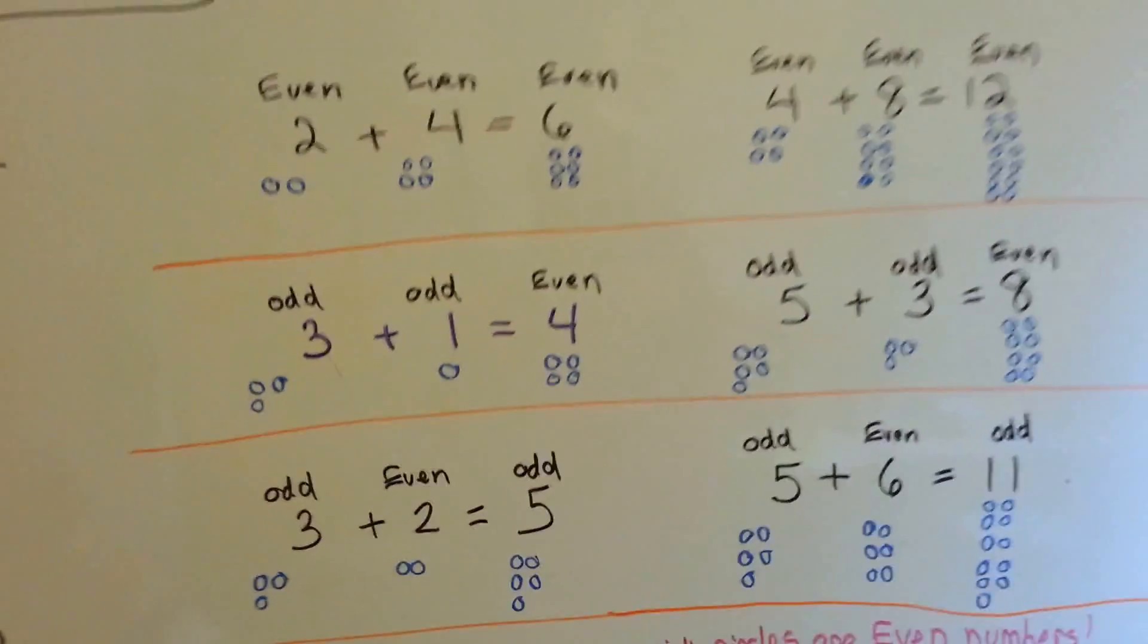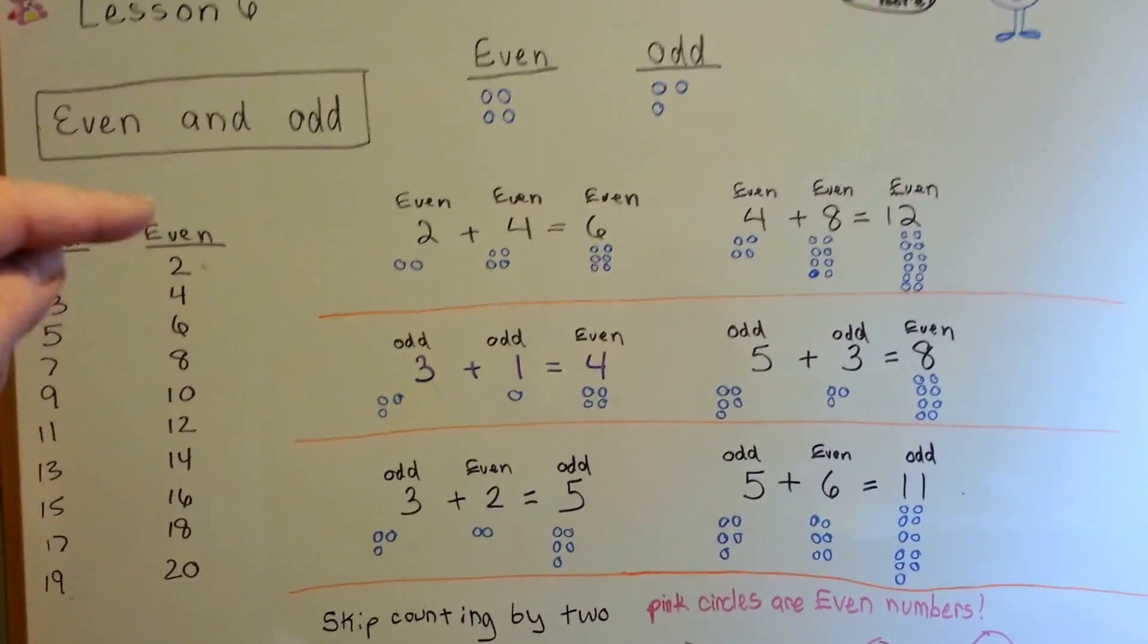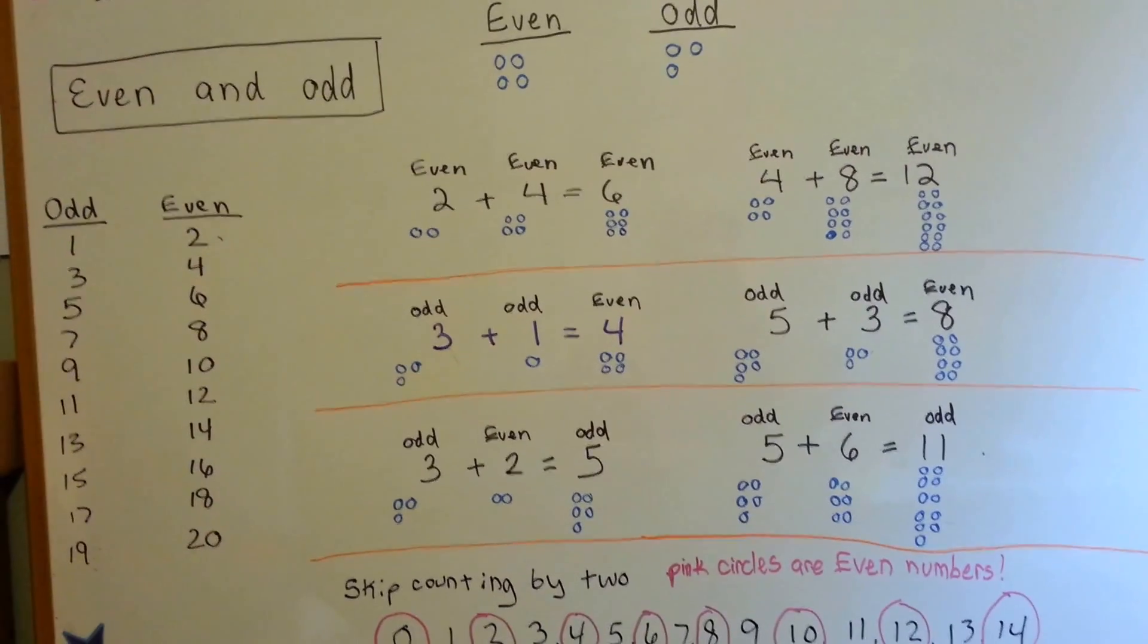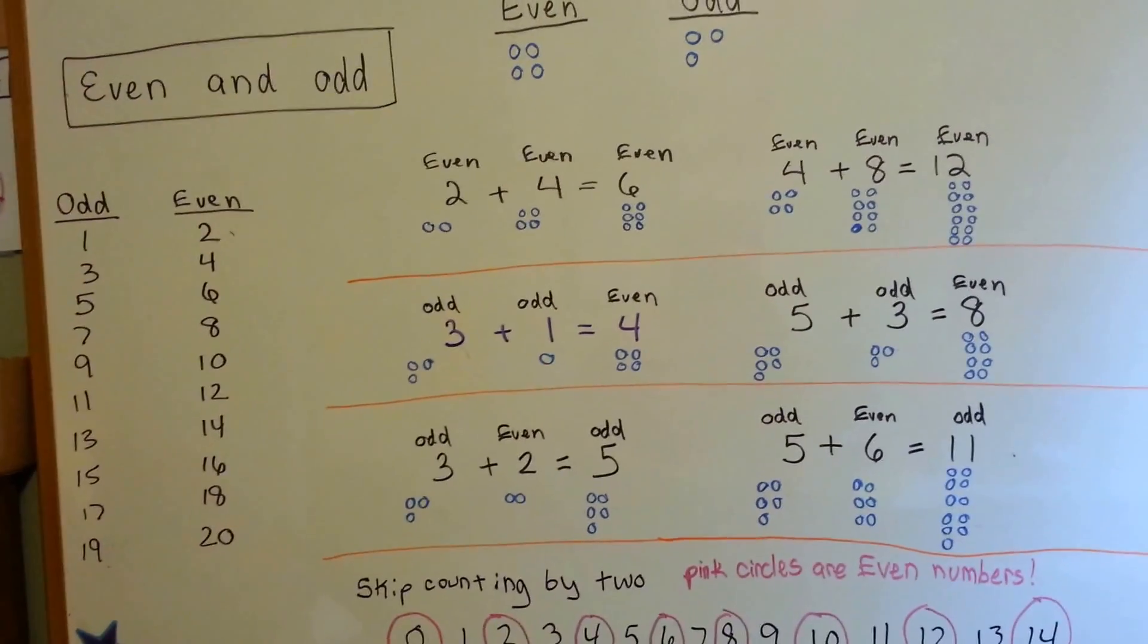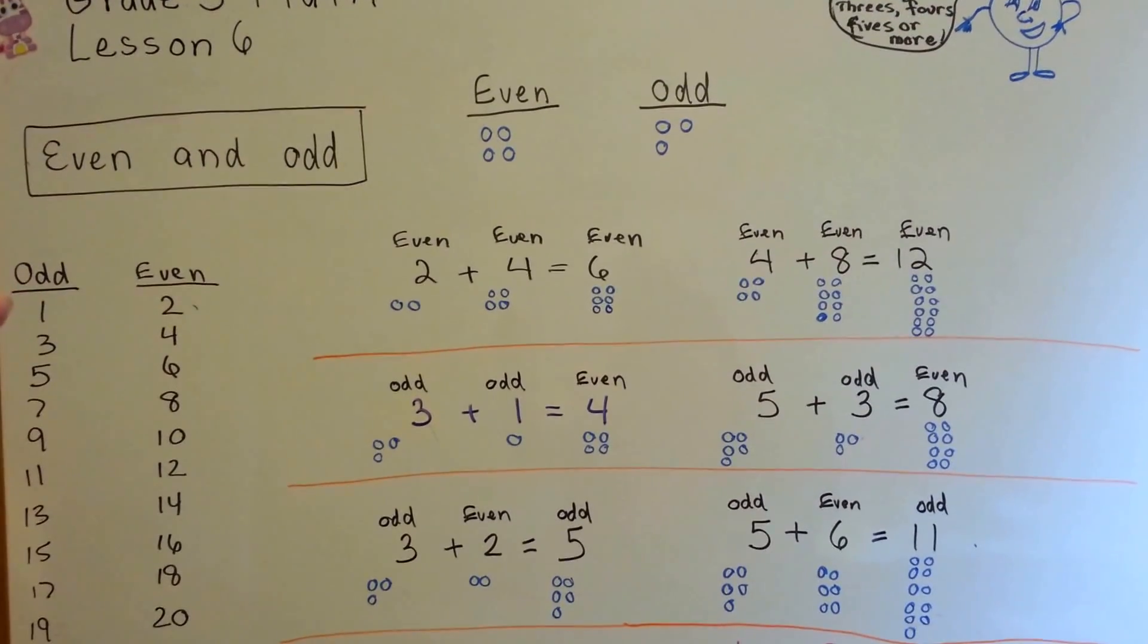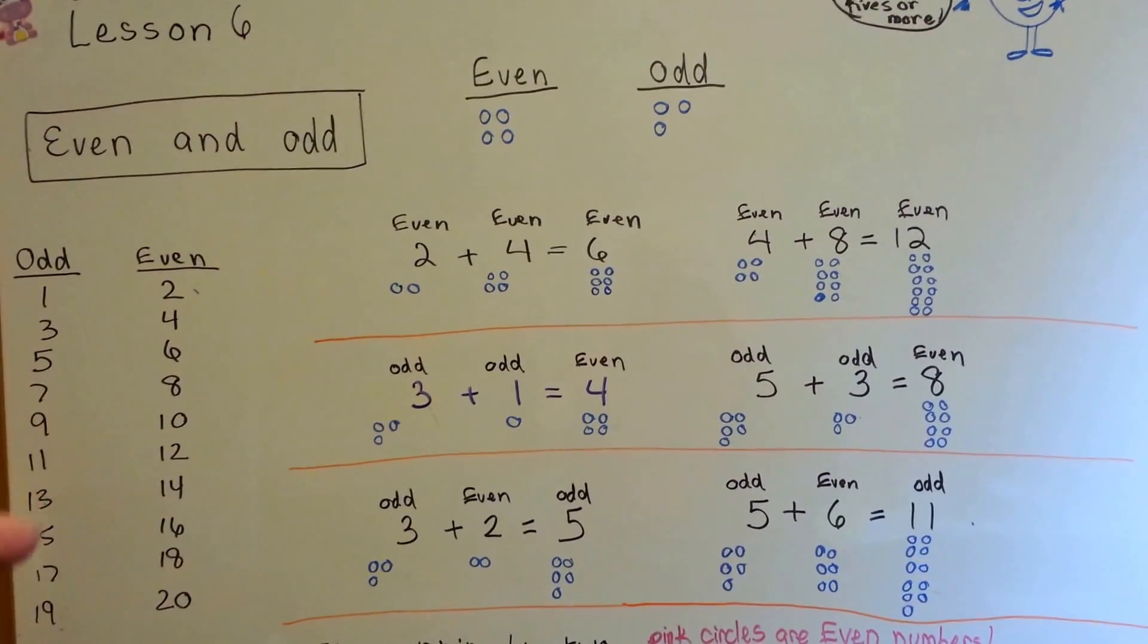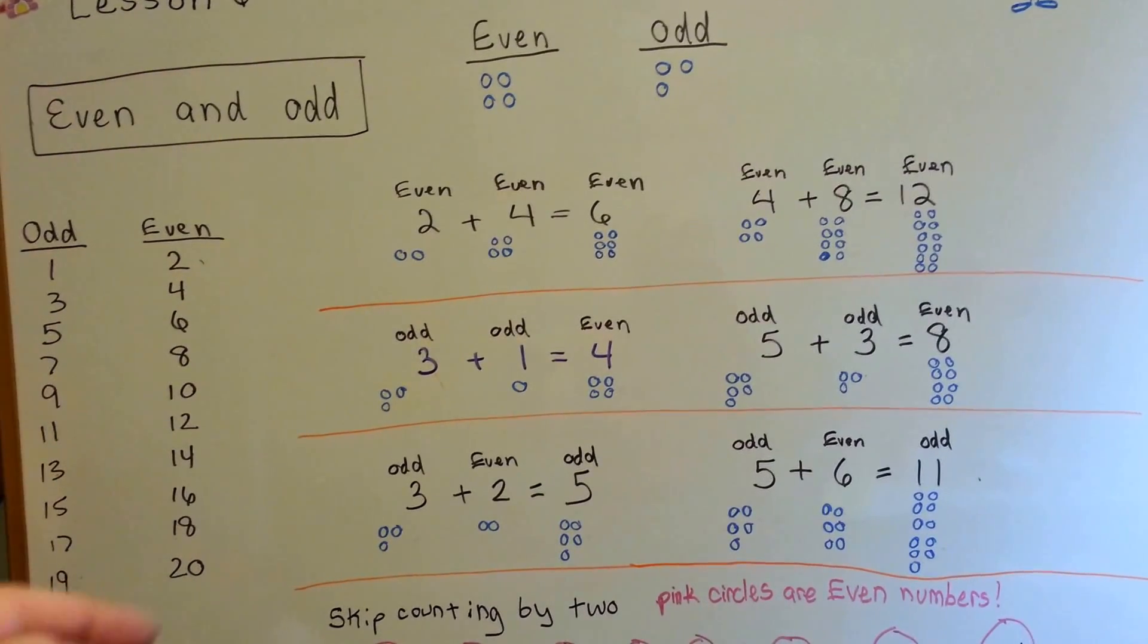So, you can skip count and tell which ones are even or odd. Just remember, starting with 1, it's odd. You can think it's odd that it's by itself. And then that'll get you started with the other odd numbers. 1, 3, 5, 7, 9 is what they end with,